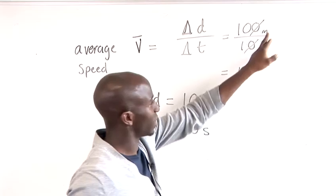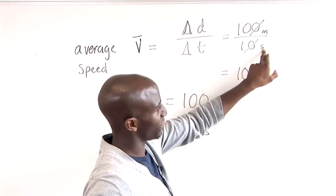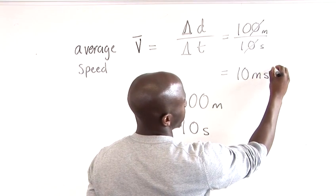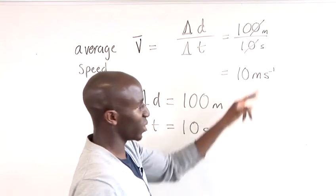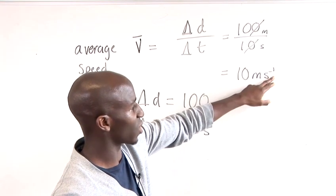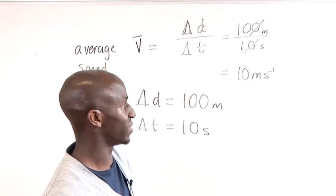And if you look at the units, meters is on the top but seconds is on the bottom, so we have meters per second. Whenever you have units on the bottom like that that are divisors, then they acquire a negative one on the index to show that it's a divider.